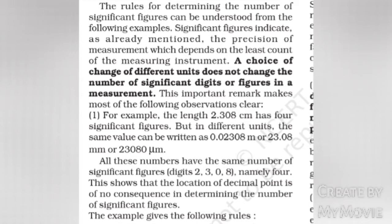A change of different units does not change the number of significant digits or figures in a measurement. For example, the length 2.308 cm has four significant figures, but in different units, the same value can be written as 0.02308 m or 23.08 mm or 23,080 µm. This shows that the location of the decimal point is of no consequence in determining the number of significant figures.